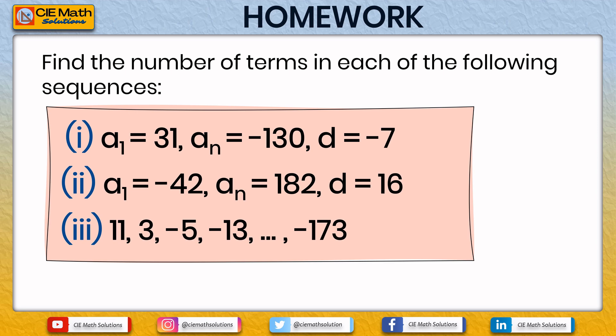Find the number of terms in each of the following sequences. First: a1 equals 31, an equals negative 130, and d equals negative 7. Second: a1 equals negative 42, an equals 182, and d equals 16. Third: 11, 3, negative 5, negative 13, … until negative 173. If you would like to practice these items, write your answers in the comment section below, and I will reply to verify your answers.